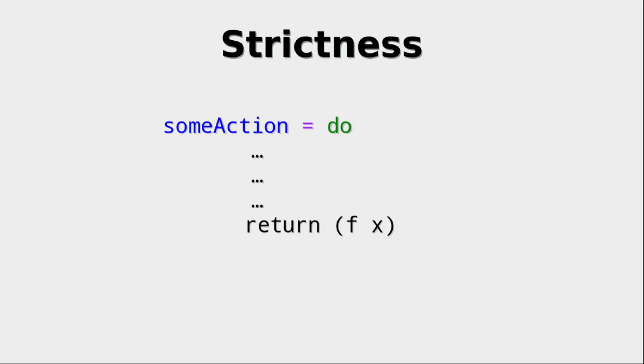So of course, we can rewrite this with the normal dollar sign, but we can also rewrite this with the dollar sign exclamation mark. And now what we do is we force the evaluation of f of x before we return. So this means that whatever return is evaluated before we do the return. So before we jump out of the monad we're in right now, we have evaluated the value.